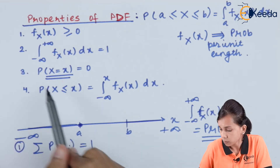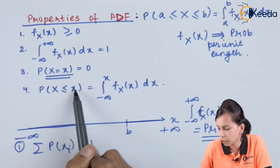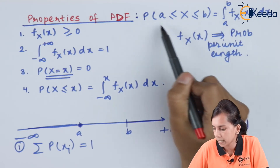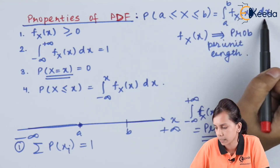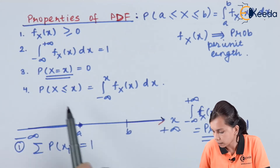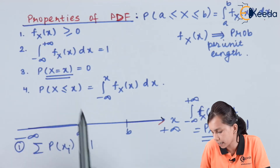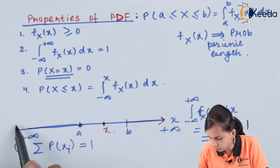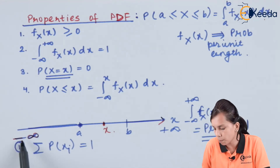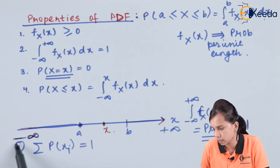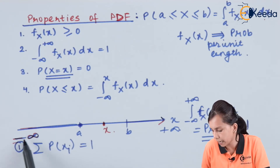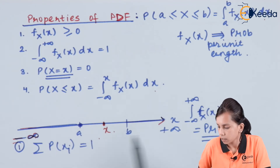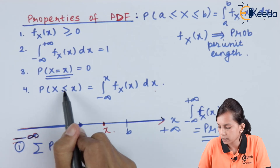The fourth property of the PDF: the probability that capital X is less than or equal to small x is defined by looking at the main equation — probability from a to b is the integral of f(x) dx. When we say capital X is less than or equal to small x, it means we are coming from minus infinity up to x. So the probability will be equal to the integral from minus infinity to x of f(x) dx. This is how we define the probability when X is less than or equal to x.